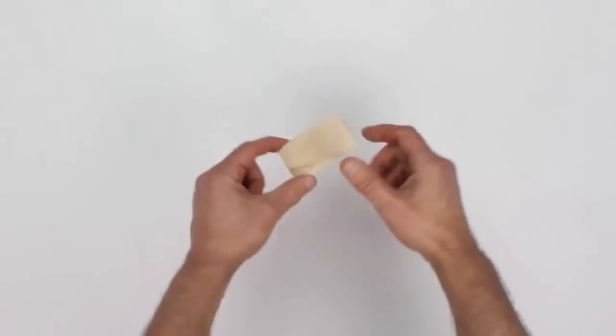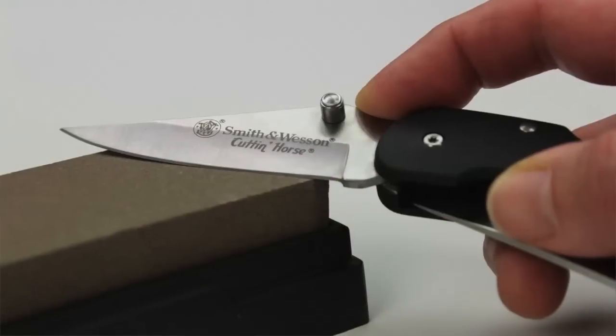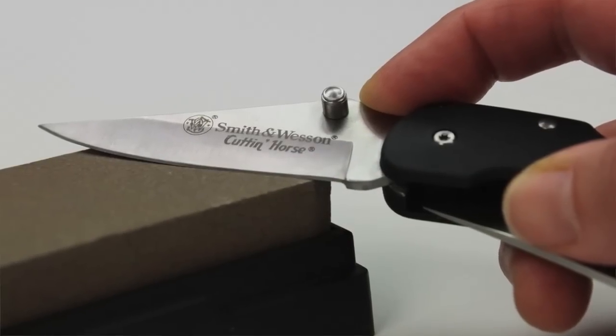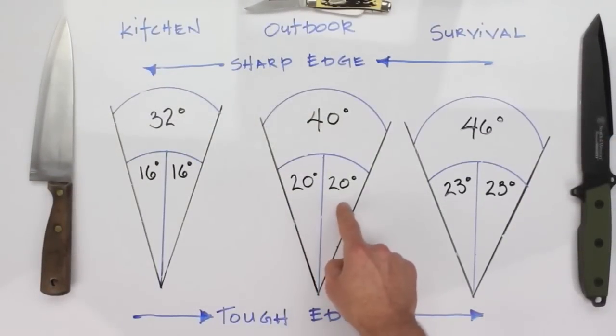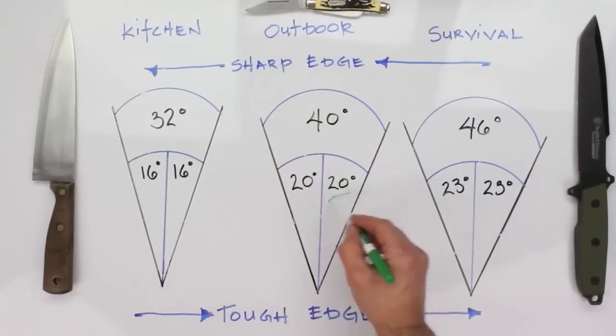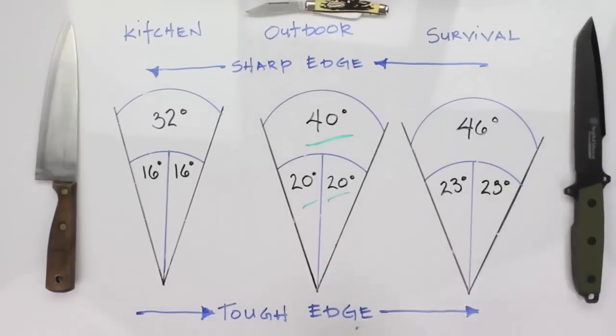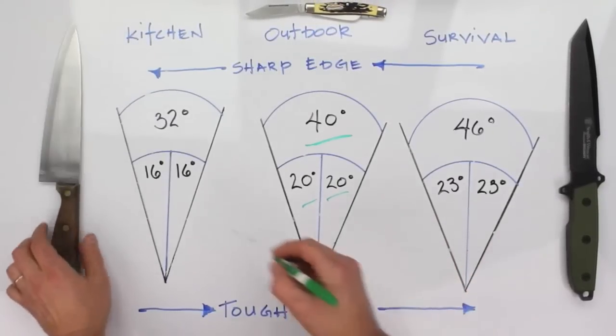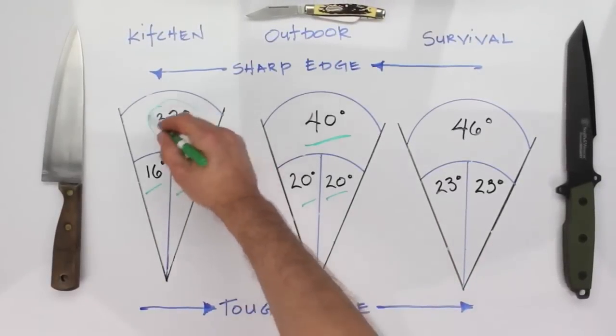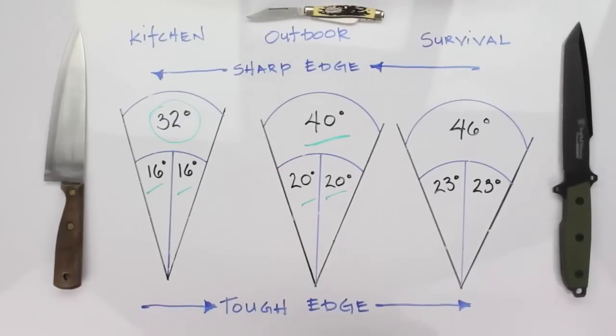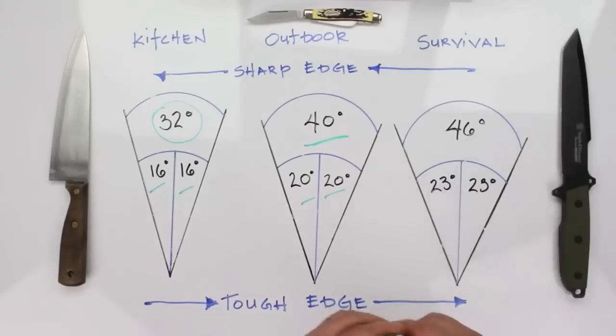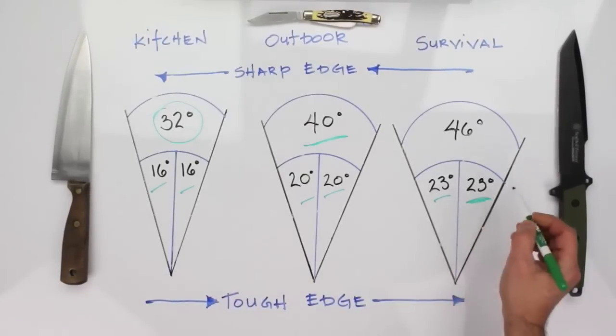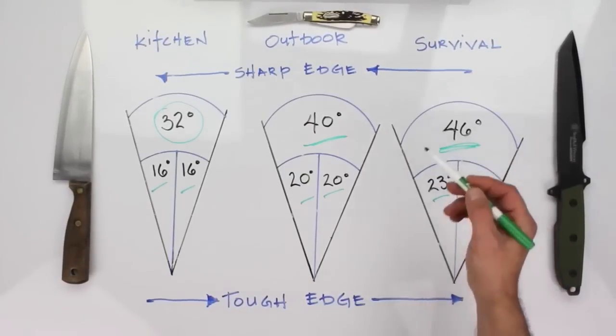So before we go any further, let me give you an introduction to blade edges and sharpening angles. Many outdoor knives have a sharpening angle of around 20 degrees on each side of the blade which equals a 40 degree blade edge. Some sharpening angles, especially those of kitchen knives, may be smaller at around 16 degrees or a 32 degree edge. Some sharpening angles like those of hunting and larger survival and tactical knives may be even larger at around 23 degrees or a 46 degree edge when we total both sides.